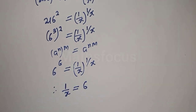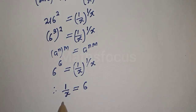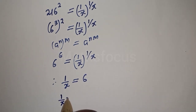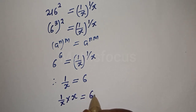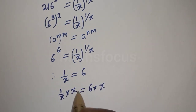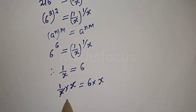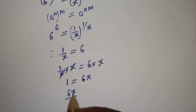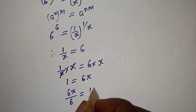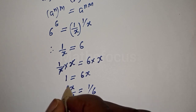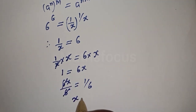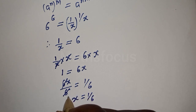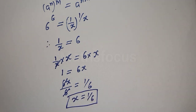Therefore, one over x equals 6. Now we solve for x. Multiplying both sides by x: one over x times x equals 6x, which simplifies to 1 equals 6x. Dividing both sides by 6: x equals one over 6. This is the final answer. Thank you.